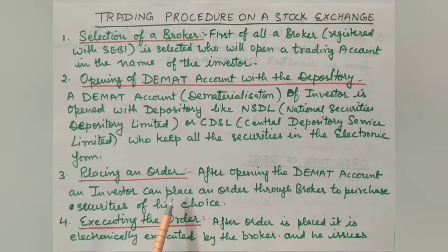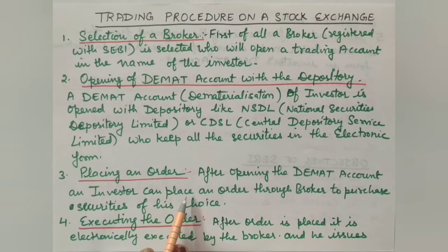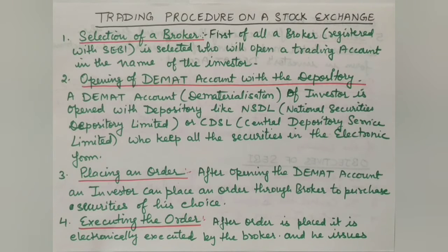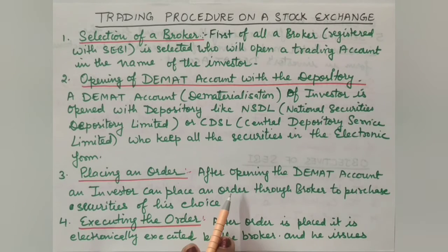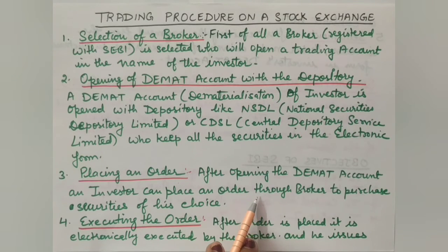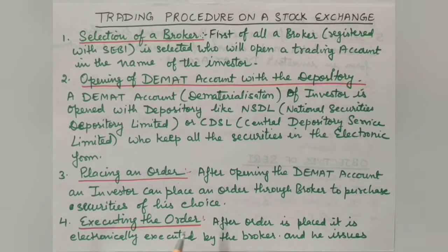The third step is placing an order. After opening the DMAT account, an investor can place an order through the broker to purchase securities of their choice. You decide which shares or debentures you want to invest in — whether 100, 200, or 1,500 shares — and according to that quantity, you place the order with your broker.